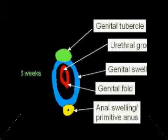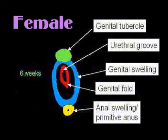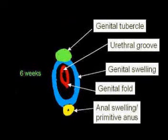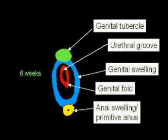External genitalia in both male and female are formed from the genital tubercle, genital swelling, and genital folds. The genital tubercle becomes the phallus. In the male, it continues its development until it is fully grown and forms the penis, with the penile urethra open at its tip — that is, the tip of the penis.